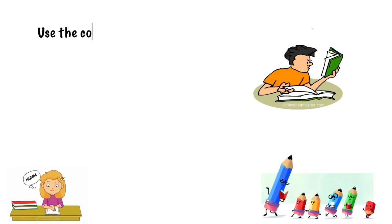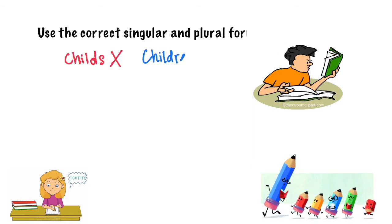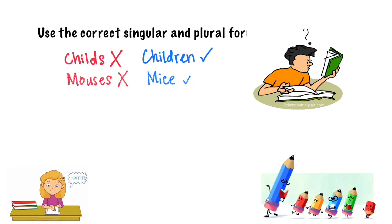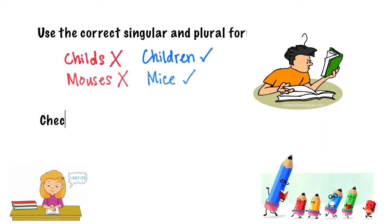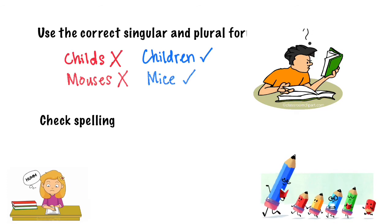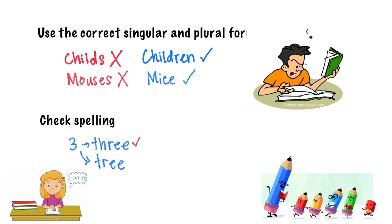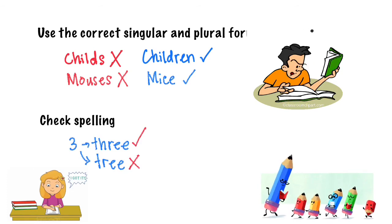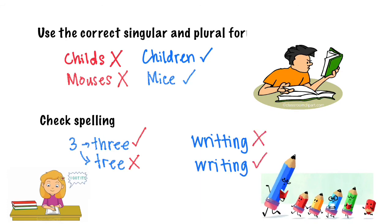Be alert with the use of singular or plural forms. For example, 'Charles' — no; 'Children' — yes. 'Moses' — no; 'Mice' — yes. And check your spelling. The number three must be spelled T-H-R-E-E, not T-R-E-E. 'Writing' must be spelled W-R-I-T-I-N-G, not with a double T.